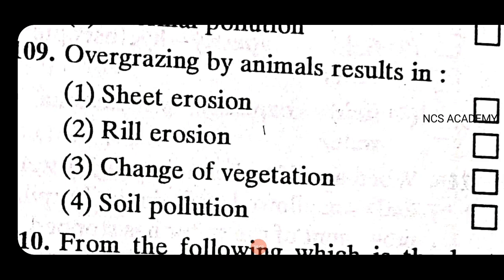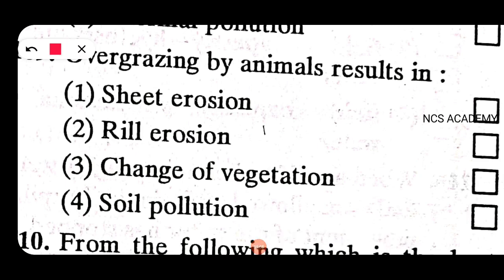Overgrazing by animals results in sheet erosion. The right answer is option one.